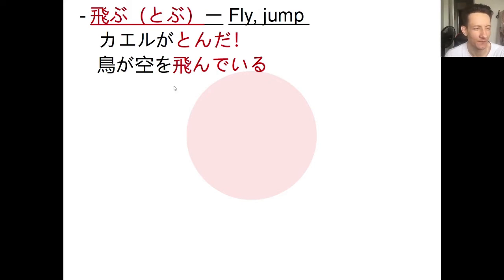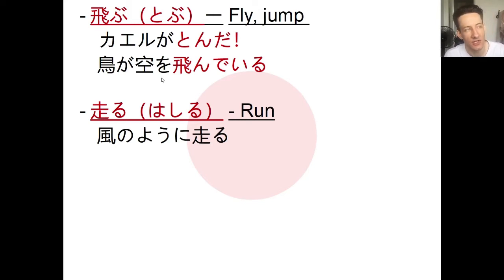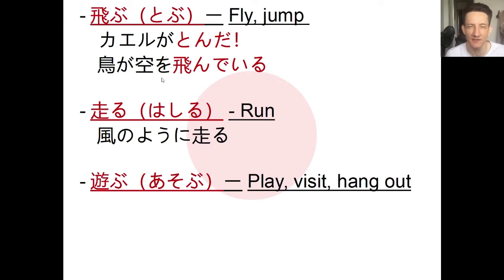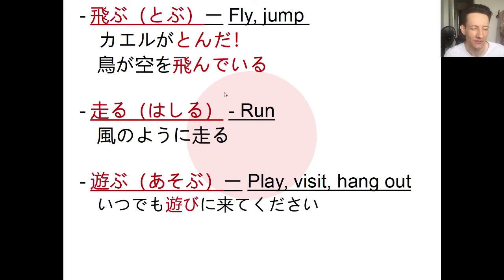Next, hashiru means to run. We can say kaze no yō ni hashiru — to run like the wind — or simply sono otoko no hito wa hashitte imasu — that man is running. Then asobu has quite a few meanings: it means to play, but also to visit or hang out. If you ask a Japanese friend what they did last weekend, they might say tomodachi to asonde ta — I was hanging out with friends.